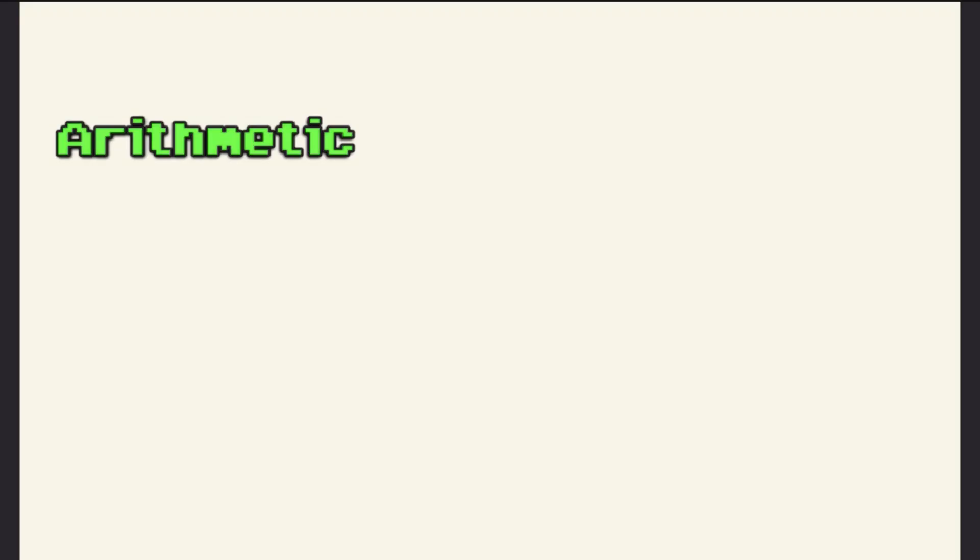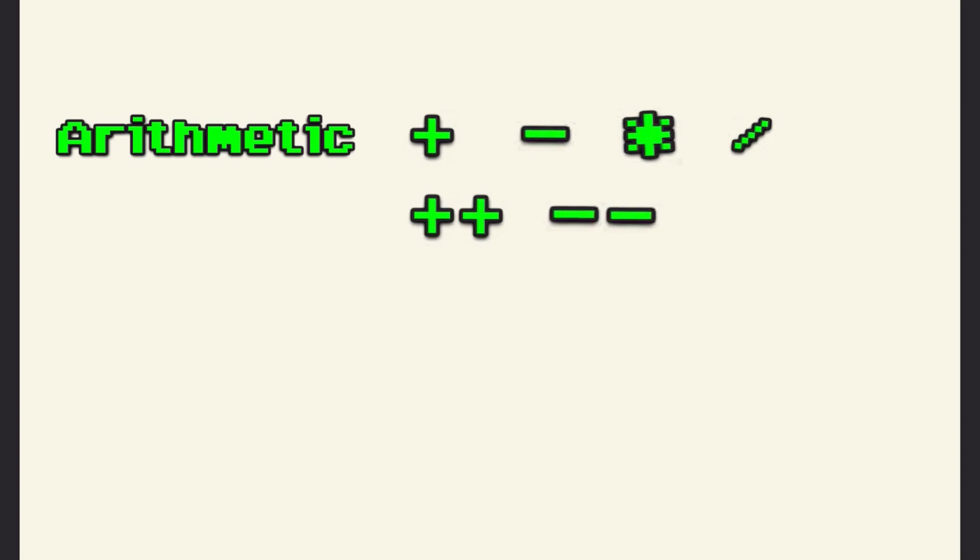The ALU has two parts: the arithmetic part, which does operations like addition, subtraction, multiplication, division, incrementing, decrementing, and so on.